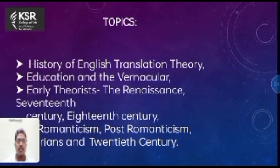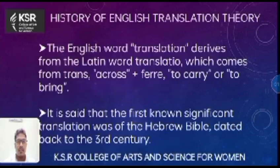Unit 2 covers the history of English translation theory, education and vernacular, early theory and Renaissance, 17th century and 18th century, Romanticism, Post-Romanticism, Puritans and Victorians, and 20th century. Let's see the topics one by one.